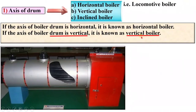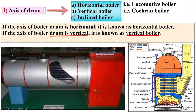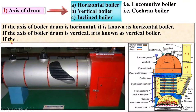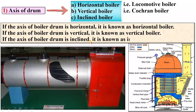If the axis of the boiler drum is vertical, it is known as a vertical boiler. The example is the Cochran boiler, and here you can see the boiler drum is in a vertical position, that's why it is called a vertical boiler. If the axis of the boiler drum is inclined, it is known as an inclined boiler, and this is a special purpose boiler.